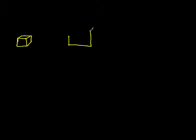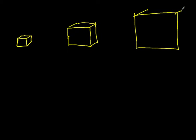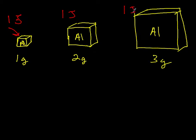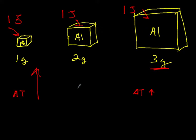Let's summarize the idea of the mass effect on temperature change. Say I have three objects — all pieces of aluminum. One gram, two grams, three grams. I impart one joule of energy via a heat source into each. Because the three-gram piece has the largest mass, it will go up by the smallest amount — its delta T is small. The one-gram piece with the small mass will have a larger delta T, and the two-gram piece will have a delta T somewhere in the middle.